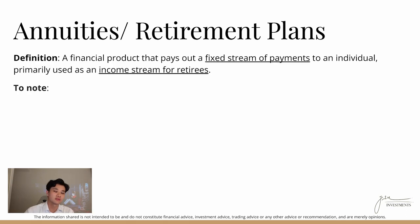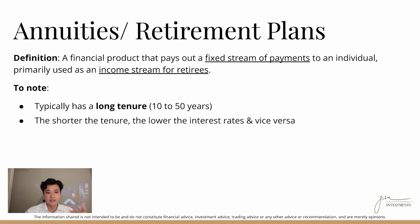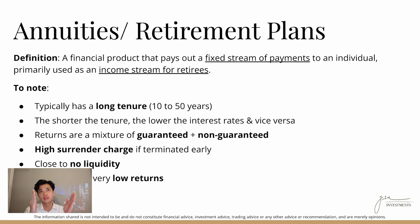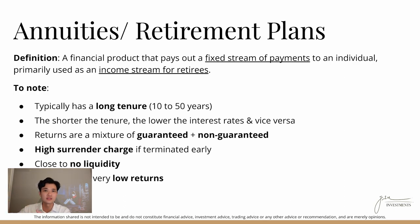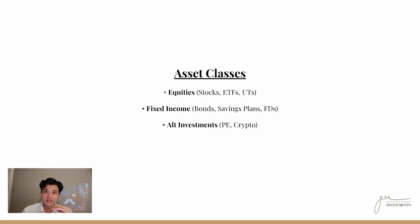Annuities or retirement plans are very similar to endowment plans — also with very long 10-year-plus time horizons and similar characteristics. Essentially, you pay in for say 10 years, wait until you're 50, and then it pays you out for 10, 15, or 20 years — funding your retirement from around age 60 to 80. I'm not going to cover alternative investments in depth since beginners would typically want to settle their bases first. And cash, as I mentioned, is one of the asset classes as well.